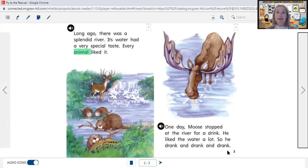If we're thinking about our sequence of events, we could already begin to think who was the first to drink from the river in the story. It says in here that Moose stopped at the river for a drink. It also shows a picture here of Moose drinking from river water. And the river was special because it had water with a special taste that every animal liked. It must have tasted delightful.